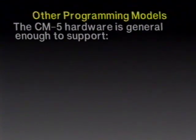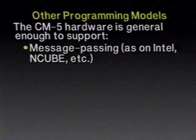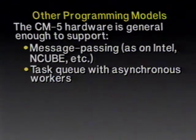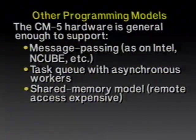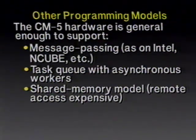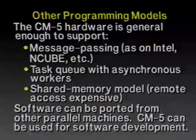So let's look at some of those other programming models. The CM5 hardware is general enough to support message passing as on Intel and N-cube machines. It also supports a model of using task queues with asynchronous workers — where you use one or a small number of processing nodes to maintain queues of tasks, and use a much larger number as workers that are dispatched. As each worker finishes one task, it reports its results and asks a task monitor for another task from the queue. Notice the interesting mixture of cooperative and competitive programming: we are using task masters to cooperate with workers in solving what is actually a competition for tasks on the task queue.